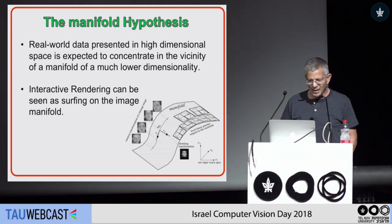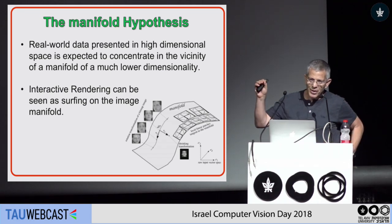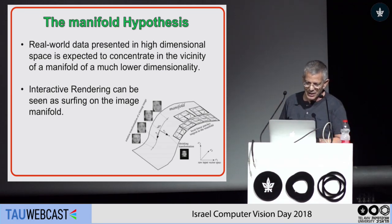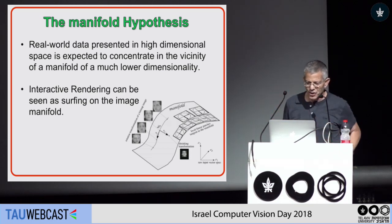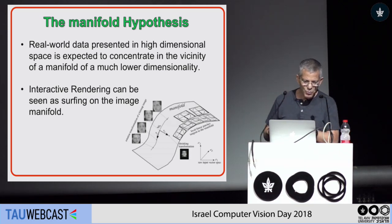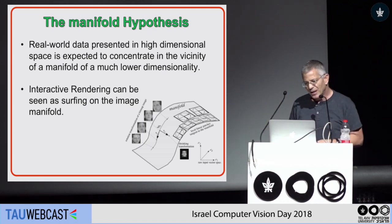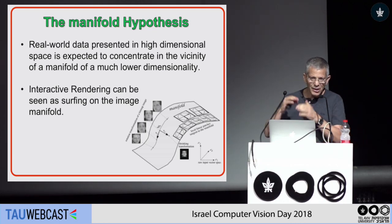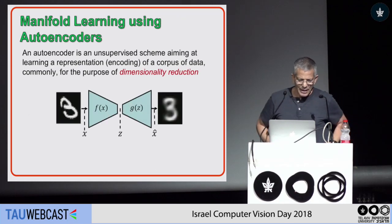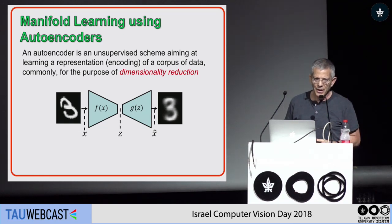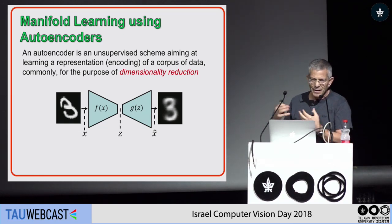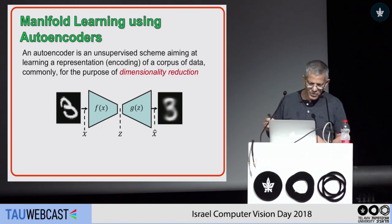We all know that real-world data, like images, can be seen as points in high-dimensional space, but they occupy a very small or tiny fraction of this high-dimensional space, which we call a manifold. Interactive rendering can be seen as surfing on that manifold. In order to extract or learn about this manifold, people use autoencoders to understand the manifold of a set of images.